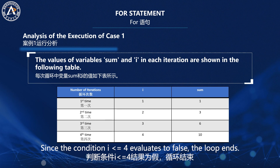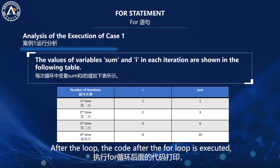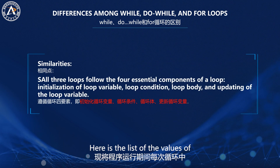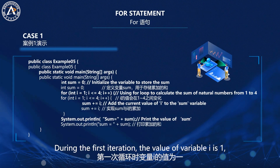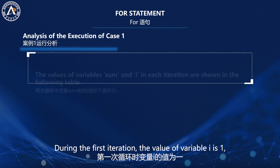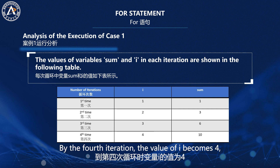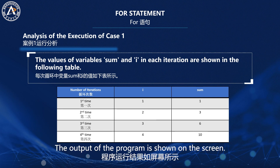This process continues until i equals 5, since the condition i <= 4 evaluates to false and the loop ends. After the loop, the code after the for loop is executed, which prints sum equals 10. During the first iteration, the value of variable i is 1 and the value of variable sum is also 1. By the fourth iteration, the value of i becomes 4 and the value of sum is 10. The output of the program is shown on the screen.